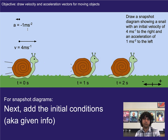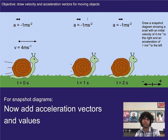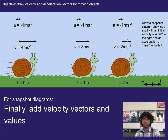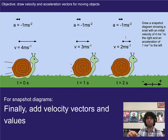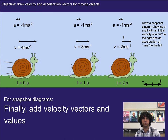Now we add in the acceleration vectors — the acceleration stays the same at negative one for each snapshot. Then we use that to create our velocity vectors, where each velocity vector shrinks by the equivalent of one unit each time. So the next one is smaller, and then we subtract again for the third. A quick scaling check: since the velocity at the second snapshot is two and the initial is four, that vector should be about half as big as the first. I often use a pencil to line it up and hold my thumb to compare sizes, or you can use a ruler if you want to be really precise.